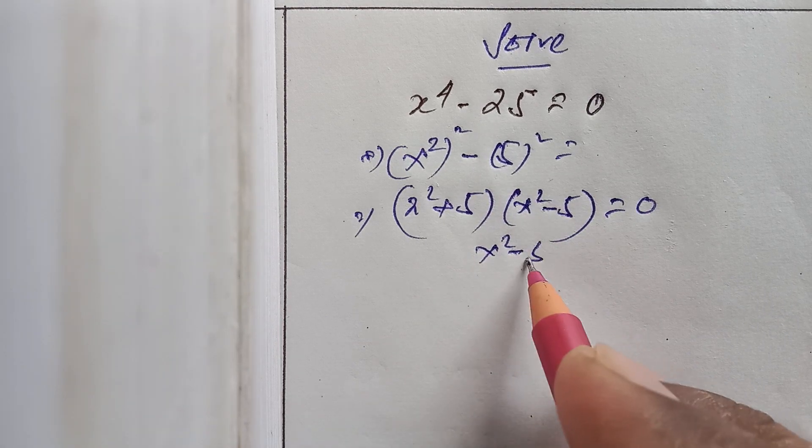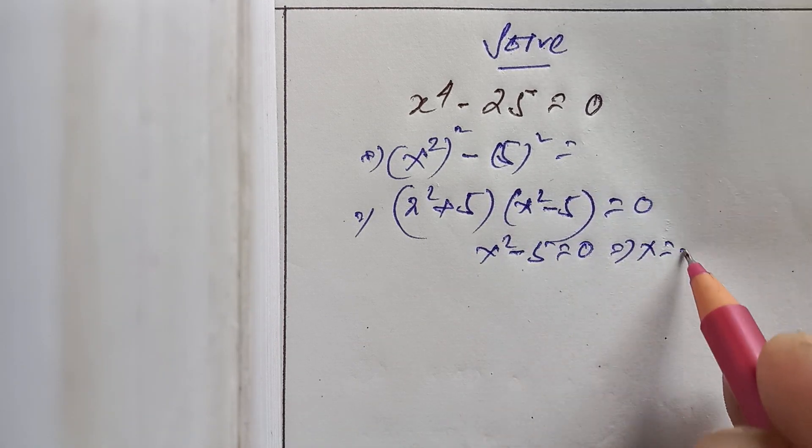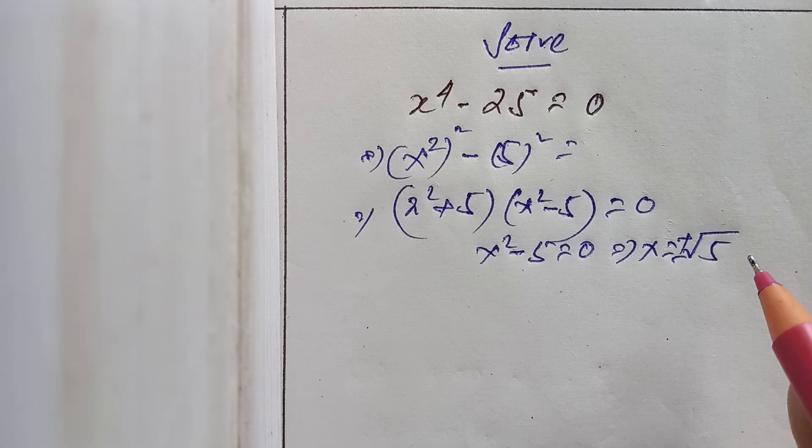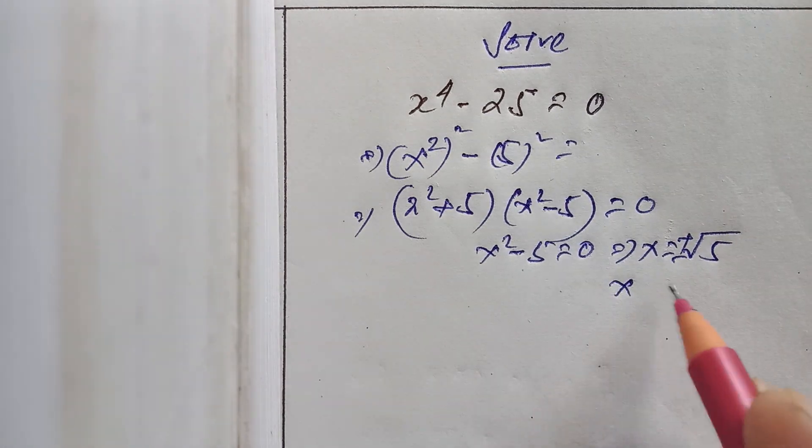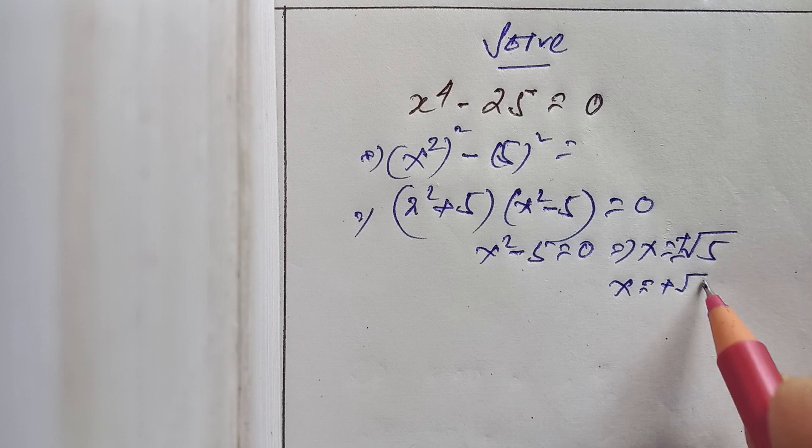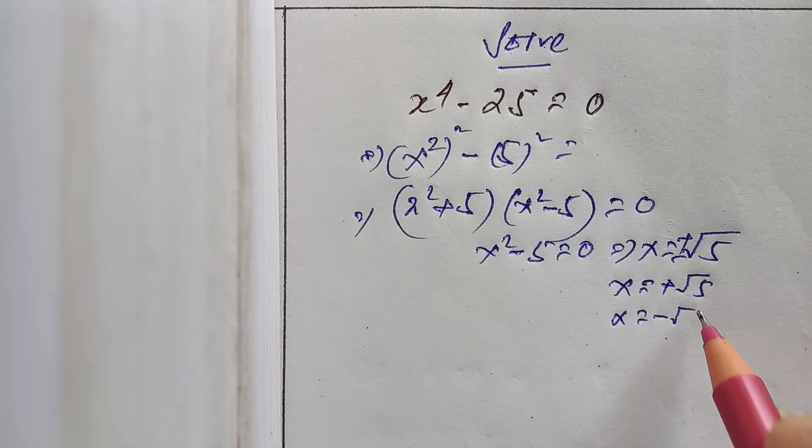Either x squared minus 5 equals 0 or x equals plus minus root 5. So I get two roots: x equals plus root 5, x equals minus root 5.